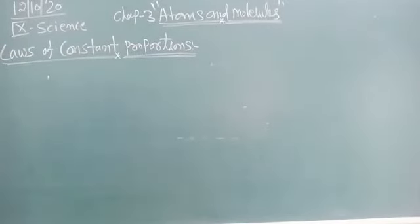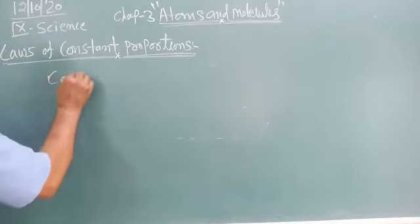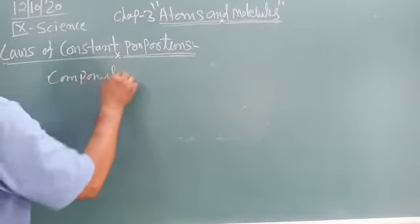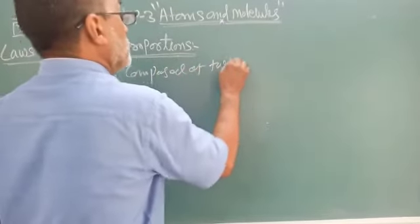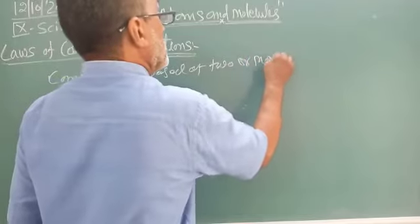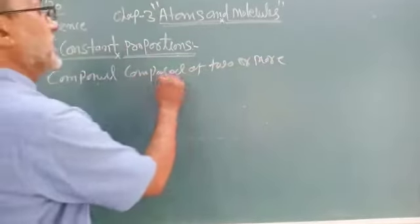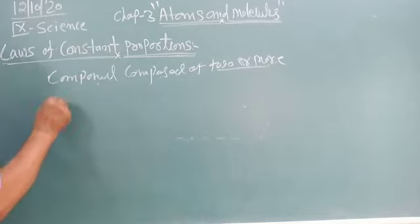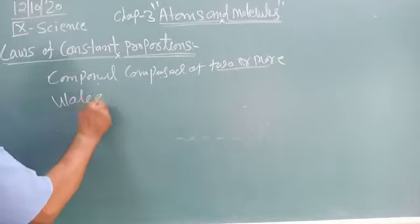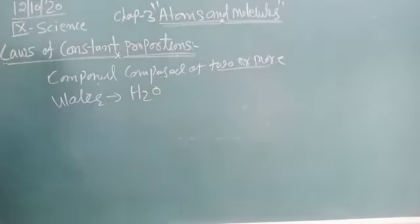Compounds are composed of two or more atoms. For example, water is H2O. By the constant mass of oxygen and hydrogen, the ratio is one to eight.